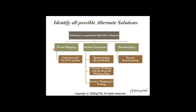To identify alternate solutions, we use several techniques. First is Process Mapping, where we have already discussed Cycle Time, Value Added Analysis, and Non-Value Added Analysis as part of Value Stream Mapping in the Analyze Phase. In the Improve Phase, we focus heavily on Ideation Techniques: Brainstorming in round-robin fashion, Creative Thinking with De Bono 6 Thinking Hats, and Creative Thinking by Probing. We also discuss various Benchmarking techniques, with a focus on Process Benchmarking.